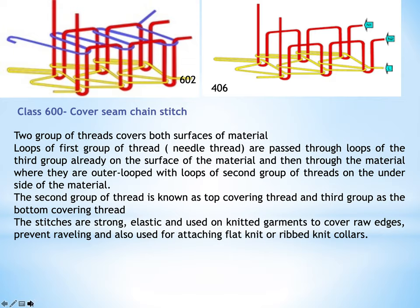So far we have discussed the different stitch classes. All these classes of stitches are machine stitches, which are more complicated to make but consume less production time compared to hand stitches. In the next lecture, we will be discussing the distinction factors and differences between hand stitches and machine stitches. That is all for today, thank you.